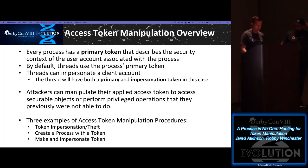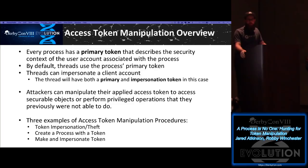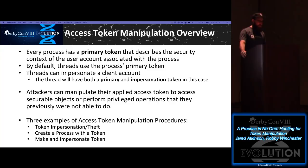To recap the research piece: every process has a primary token. Threads can have their own token called an impersonation token, but by default they will inherit the primary token from the process. Attackers can manipulate the tokens, apply different tokens to the thread they're executing from, and then they're able to operate under the context of a different or more privileged user. We've broken this up into three different procedures for accomplishing access token manipulation: token impersonation or token theft, create a process with a token, and make an impersonate token.